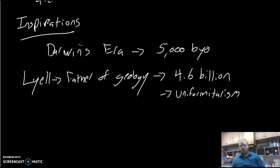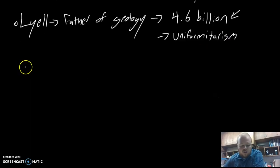His big thing is this idea of uniformitarianism: that the earth is shaped by the same processes that shaped it in the past. The processes affecting us today—earthquakes, volcanoes—are the same processes that occurred in the past. Lyell's work helped inspire Darwin and gives him a better time frame, because 4.6 billion years is significantly more than 5,000.